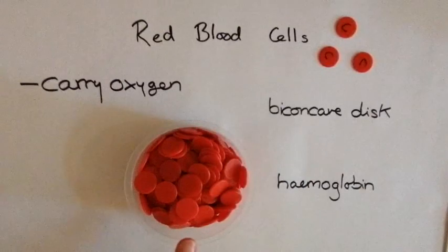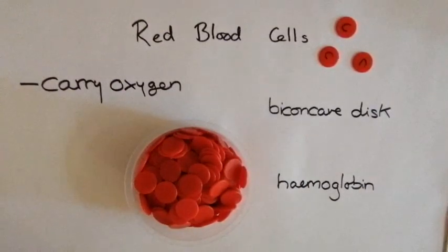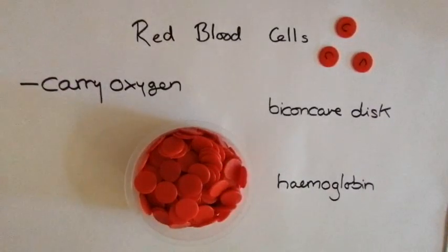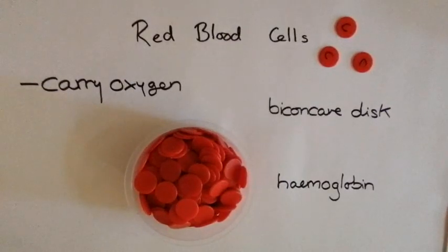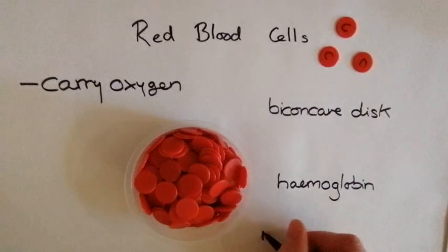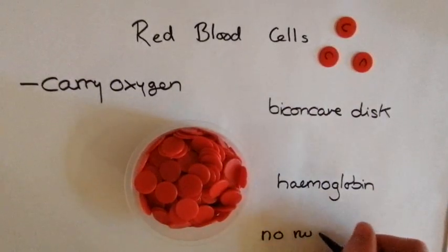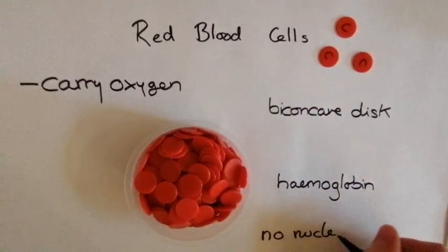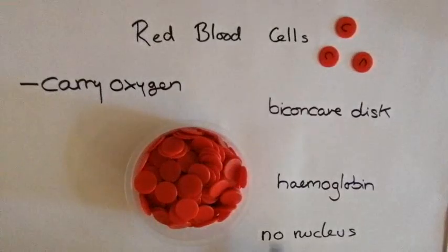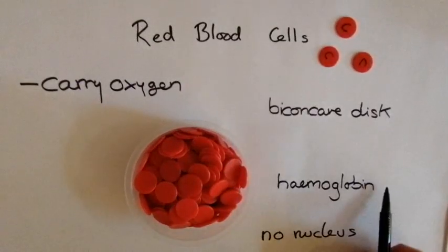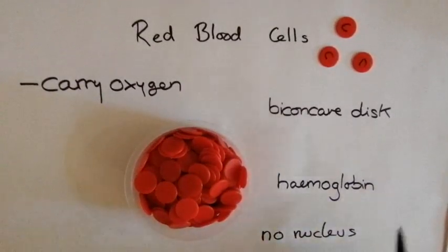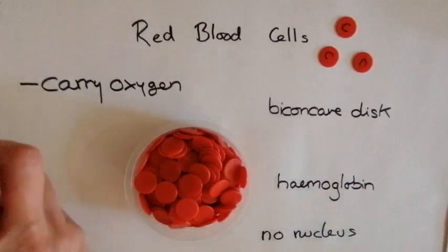This is another structural adaptation of the red blood cell. The nucleus was removed as part of its maturation process — when it was growing up to be a fully fledged red blood cell, the nucleus is taken out. By having no nucleus, it can fit extra haemoglobin, and by having extra haemoglobin, it can carry extra oxygen.